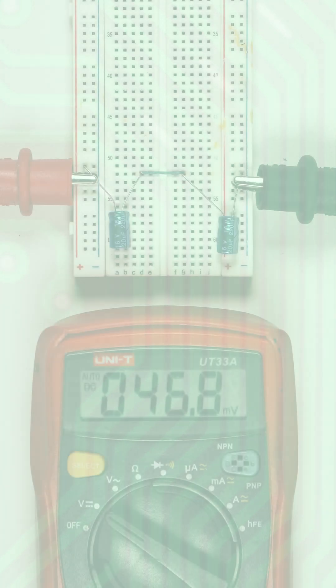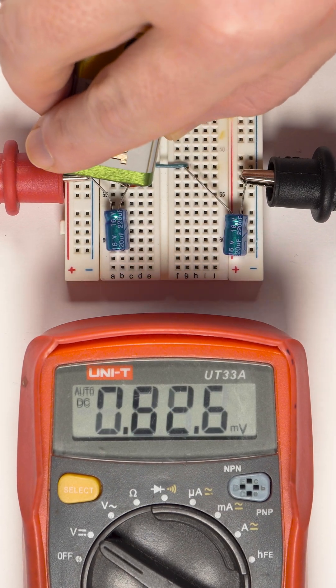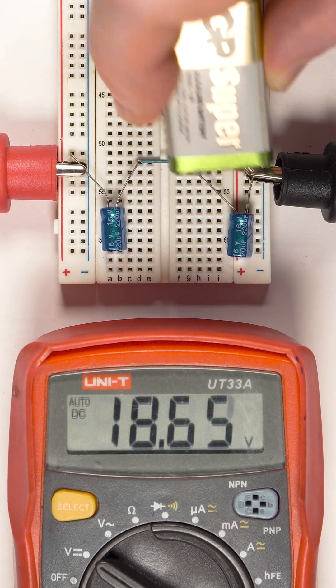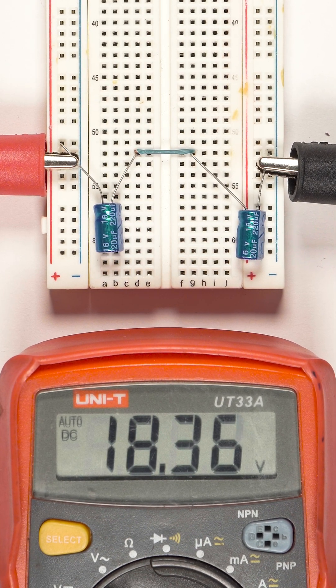Here I have two capacitors and a multimeter measuring the total voltage. If I charge the capacitors individually using a 9V battery, the output, as expected, yields 18V.